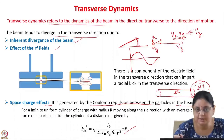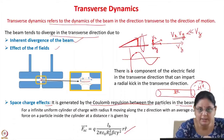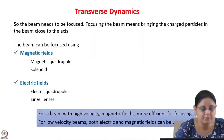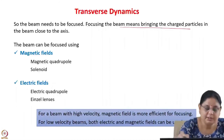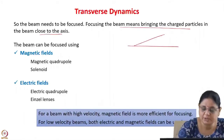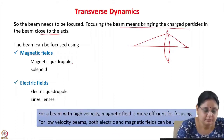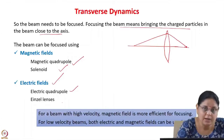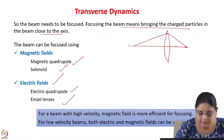So we need to focus the charged particles. These charged particles can be focused just like a ray of light is focused using lenses. Since these are charged particles that respond to electric fields and magnetic fields, we will use magnetic fields and electric fields for focusing. Focusing the beam means bringing the charged particles in the beam close to the axis. We use magnetic quadrupoles and solenoids for focusing. We also use electric fields, electric quadrupoles, or Einzel lenses for focusing. For a beam with high velocity, magnetic field is more efficient for focusing, whereas for low-velocity beams, both electric and magnetic fields can be used.